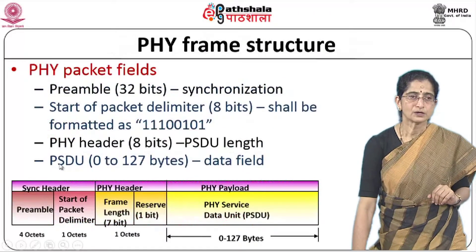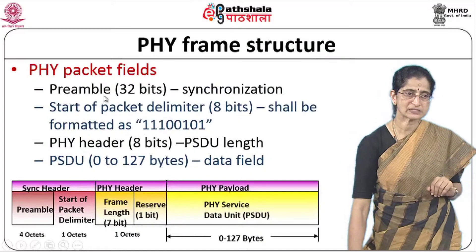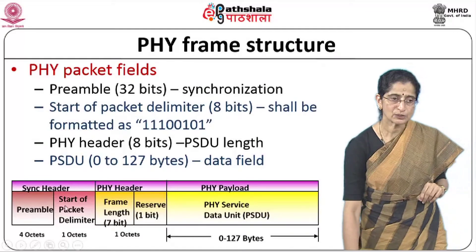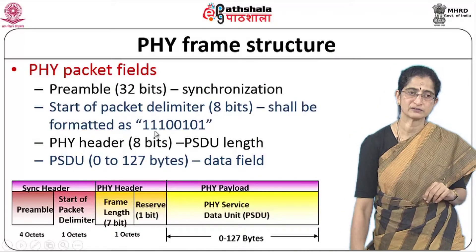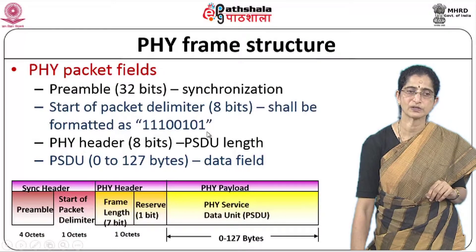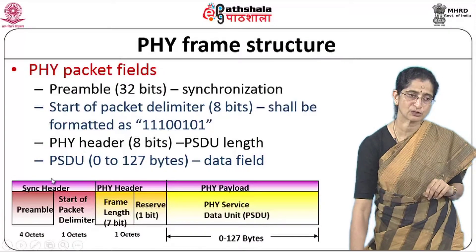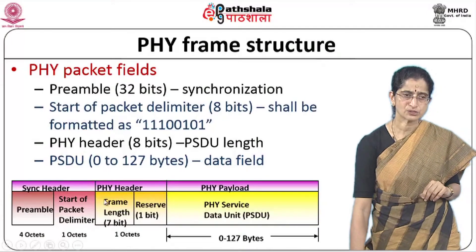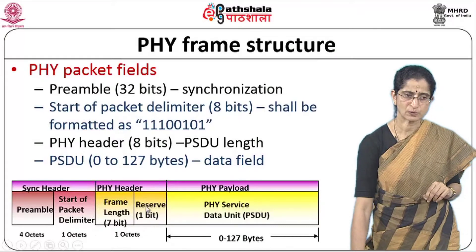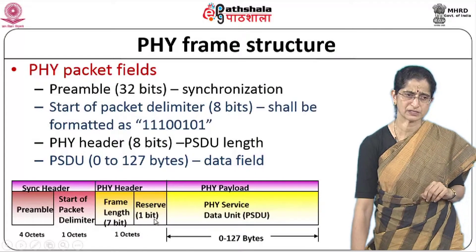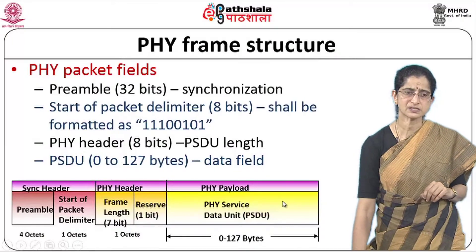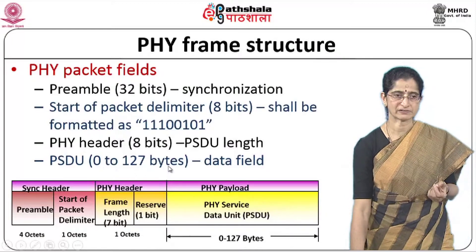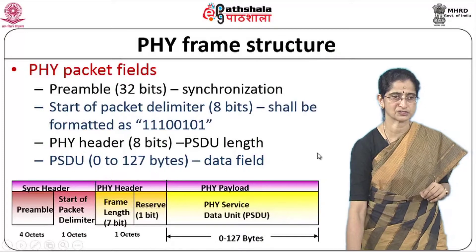Physical layer functionalities include activation and deactivation of the radio receiver, energy detection within the current channel, link quality indication for received packets, clear channel assessment for CSMA/CA (Carrier Sense Multiple Access with Collision Avoidance), channel frequency selection, and data transmission/reception. The frame structure uses a 32-bit preamble for synchronization, a start-of-packet delimiter (pattern 11100101), a physical layer header with frame length, and a PSDU data field varying from 0 to 127 bytes.